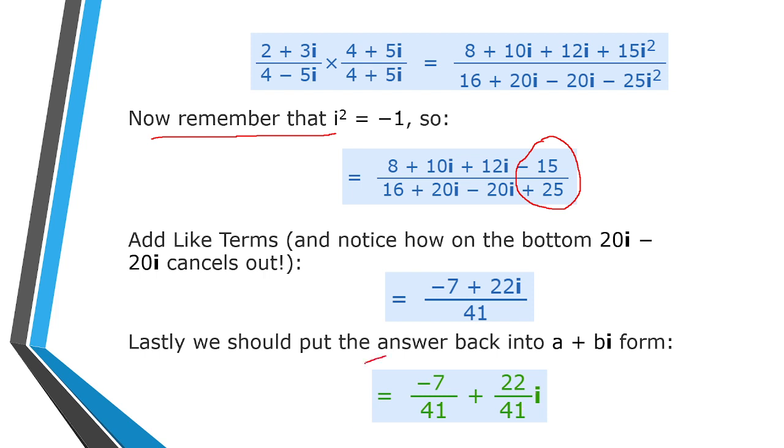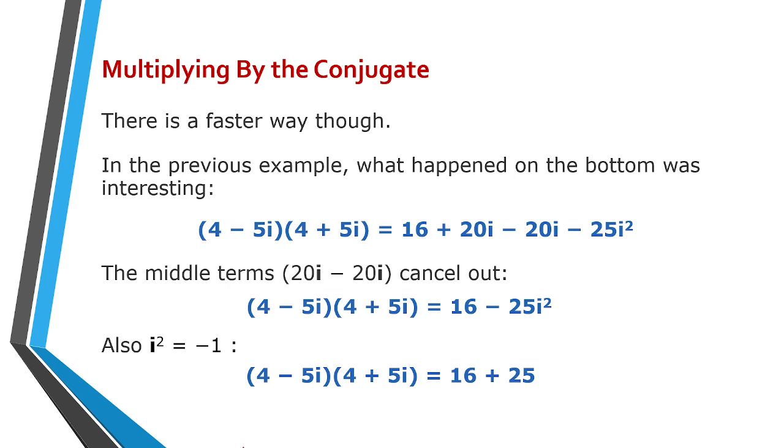Multiplying by the conjugate, there is a faster way though. In the previous example, what happened on the bottom was interesting. We have (4-5i) times (4+5i), so 16+20i-20i-25i². The middle terms cancel, so we get 16-25i².